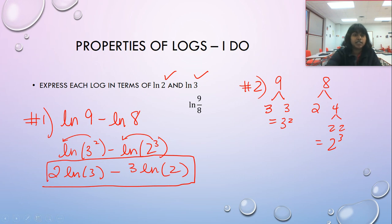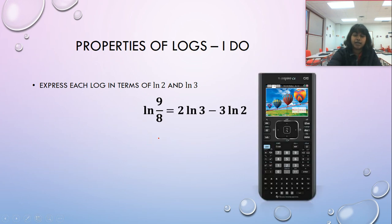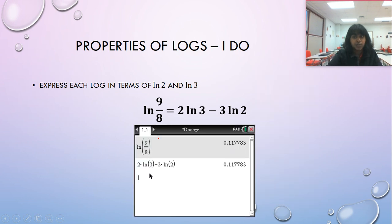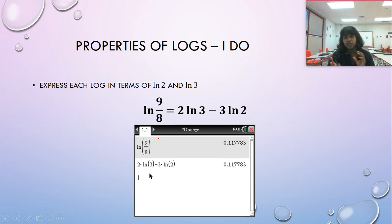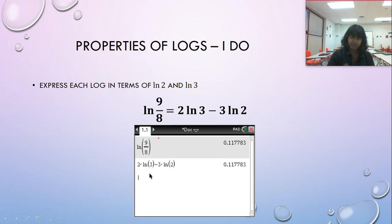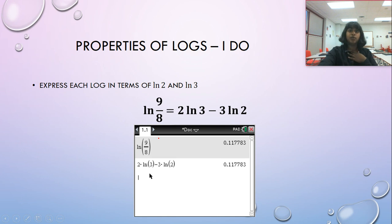To verify, we check it in a calculator — those are the same answers. Natural log of nine divided by eight can really be rewritten as two times the natural log of three minus three times the natural log of two. This helps us as we progress to solving, where we have to be able to manipulate these expressions whether they contain real numbers or variables.